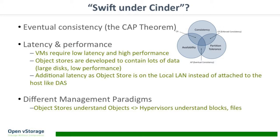The second reason is that Swift is designed for large amounts of storage and large amounts of objects, so it's not really performant. It has latency and typically runs on normal SATA drives — large capacity, like eight-terabyte drives. So it's not ideal for virtual machines. Databases require really low latency, fast, high-performance storage, and that's typically not something Swift will give you.